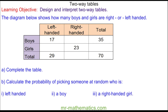We can begin by working out the number of boys that are right-handed. This would be the difference between the total and those who are left-handed, so 35 take away 17 is 18. We can now work out the total number of right-handed people as the sum of 18 and 23, and this is 41.